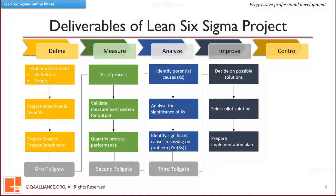The Improve Phase consists of deciding the possible actions. A piloting of the solution is done, and if it goes well, implementation is done across the scope of the project or as appropriate. Sometimes, one project may lead to an improvement plan implementation across the entire organization.